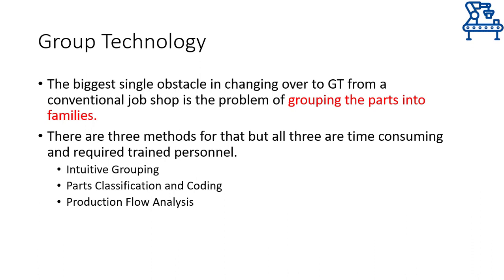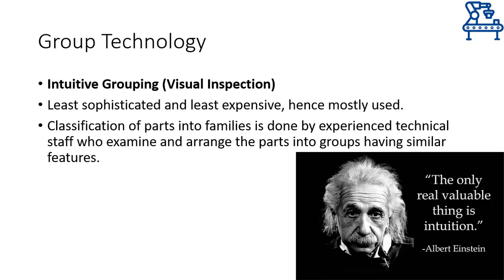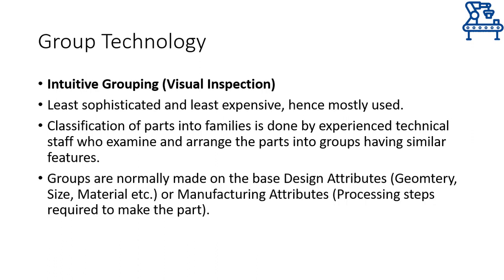The first method of generating part families is quite straightforward, though not as simple as it sounds. Intuitive grouping is also sometimes called grouping through visual inspection. The only requirement is the presence of experienced technical personnel who can inspect and group parts into families based on design attributes such as geometry, size, and material, or manufacturing attributes such as processing steps or machines required. It is the sheer experience of the technical staff that allows this grouping, with no formal documentation involved. Hence, although it's the least sophisticated method, it is the most used in industries.